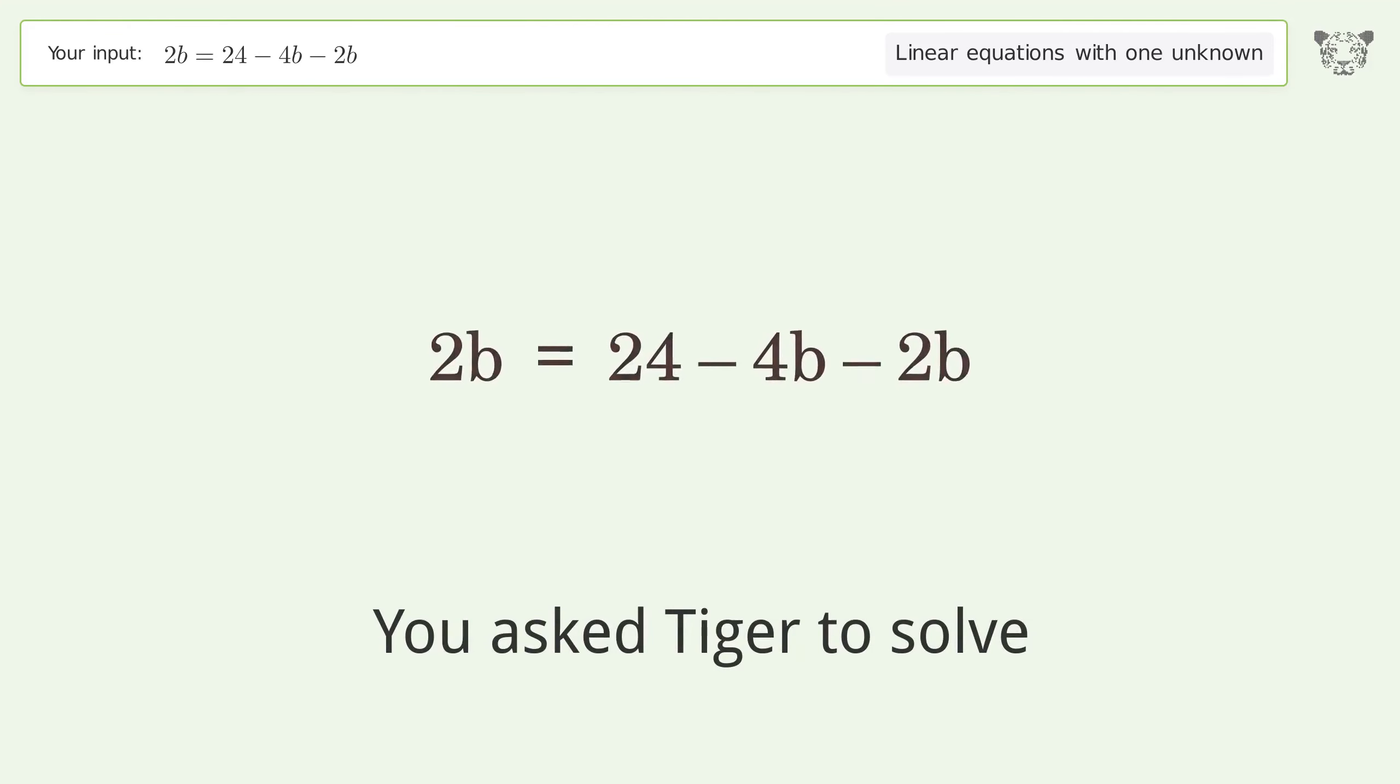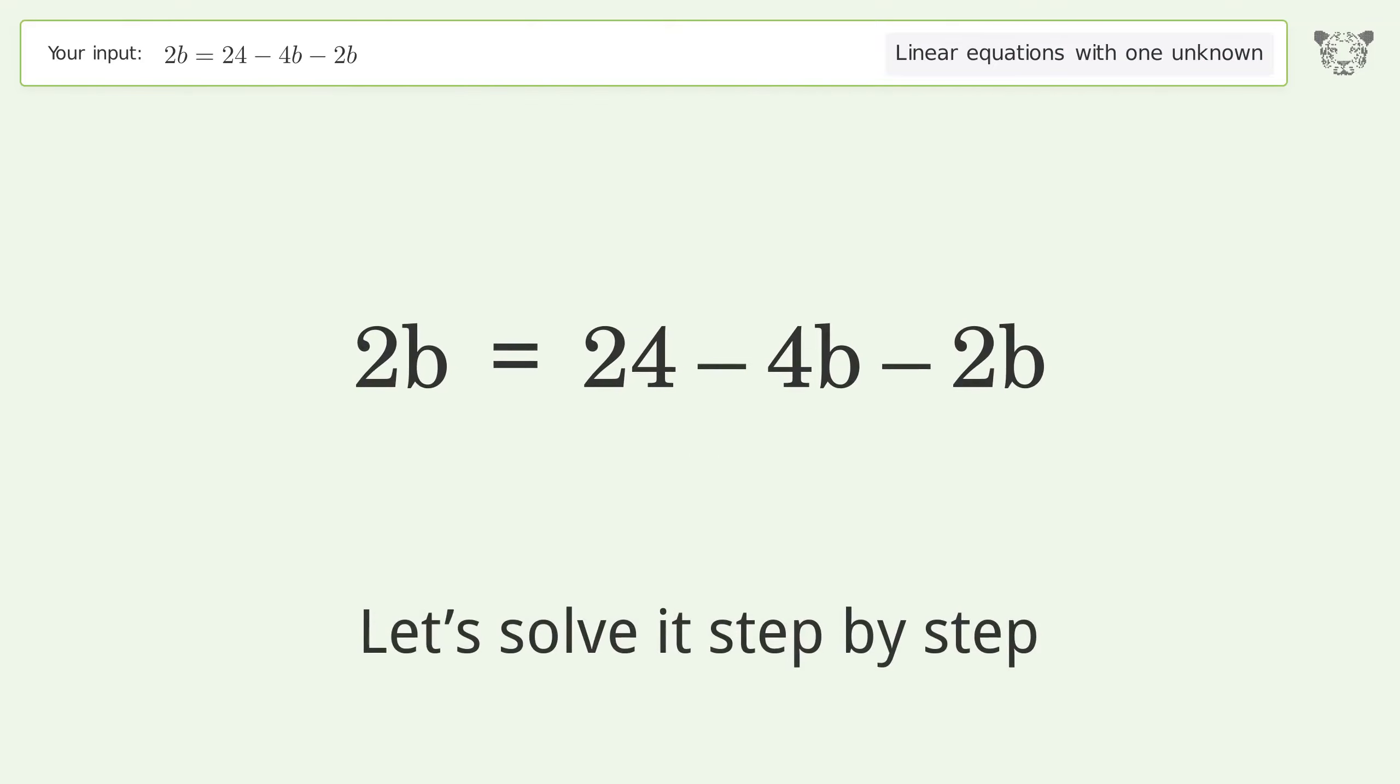You asked Tiger to solve. This deals with linear equations with one unknown. The final result is b equals 3. Let's solve it step by step.